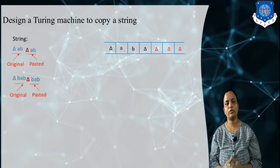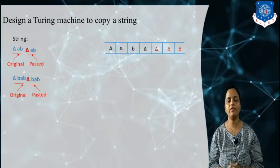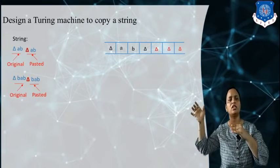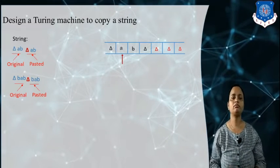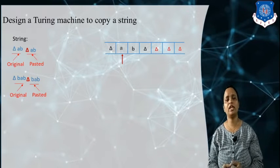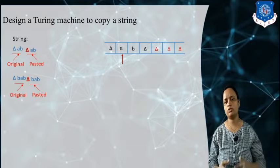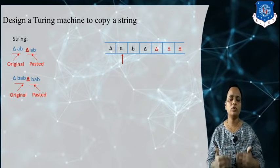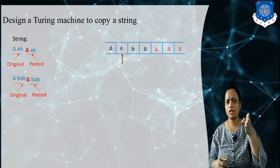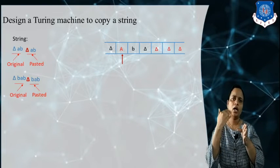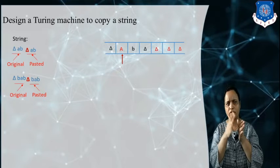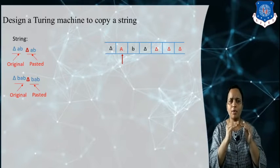How can we generate the copy of the input string? I have taken the input string delta a b delta, followed by a number of empty cells. For doing the copy, we are using the empty cells of the tape. My tape head is right now at the first symbol of my input string, which is 'a'. The Turing machine takes the first 'a' and replaces small a with capital A — it marks the character to indicate it needs to be copied.